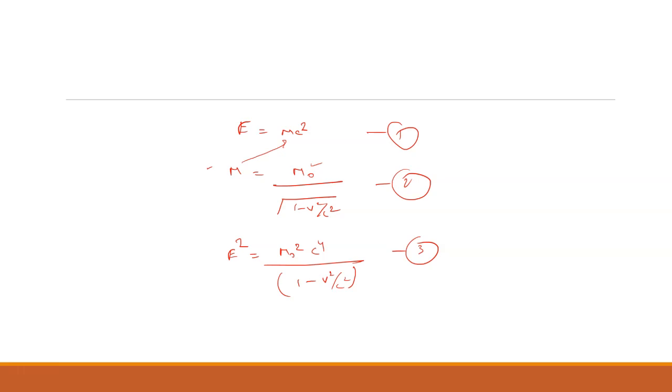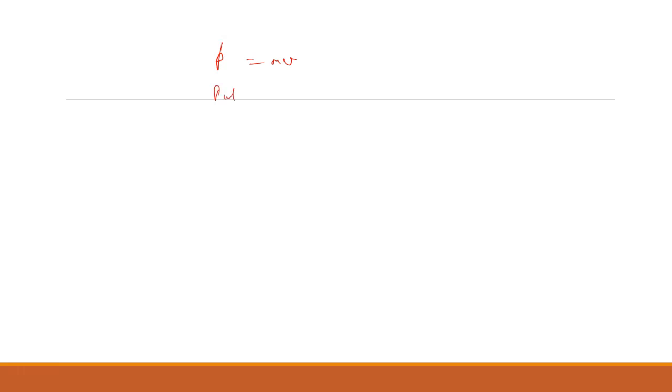Momentum is given by p equals mv. Now put equation two again into this momentum expression and square it. So p squared equals m₀ squared v² divided by 1 minus v²/c².